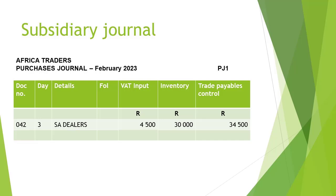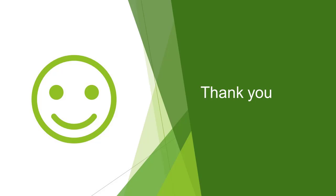If we now go back to our purchases journal, you will see that we record the amount of R4,500 in the VAT input column. Looking at this purchases journal, you will see the document number, the day, the details, the VAT input amount, the inventory amount, and the trade payables control amount all correspond to our original invoice. After watching this short video, you should now be able to take an invoice for a registered VAT vendor and record the purchase of inventory on credit in the purchases journal when a business makes use of the perpetual inventory system. Thank you for watching.